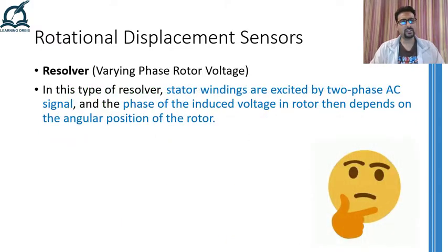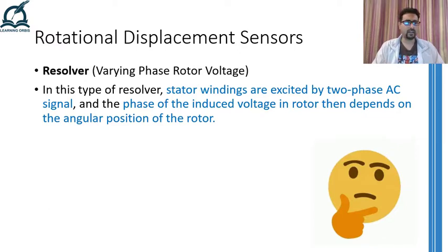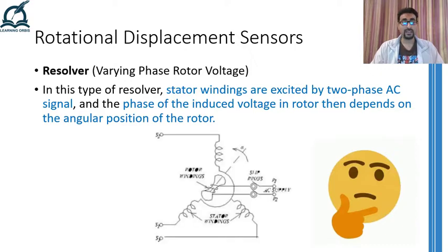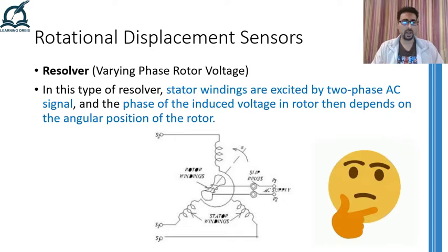In the varying phase rotor voltage form, instead of the rotor, the stator windings are energized with different phase AC signals. If the rotor is facing the sine stator winding, sine voltage is induced in the rotor; if it is facing the cosine stator winding, cosine voltage is induced. The phase of the induced voltage depends on the angular position of the rotor. Devices similar to resolvers but incorporating three stator windings are called synchros. They have a similar working principle but provide better resolution because of the three stator windings.